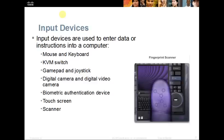We can add a digital camera or digital video to our computer — they're usually connected via USB or FireWire. Biometric authentication devices, such as a fingerprint reader or retina scanner, are also input devices. Touchscreens on tablets and smartphones are input devices, and scanners allow us to input information by converting paper files to electronic files.